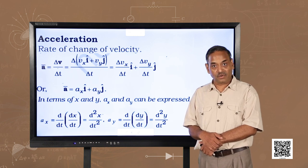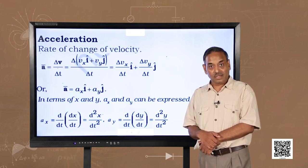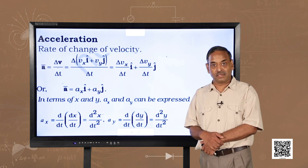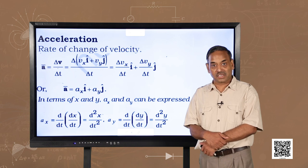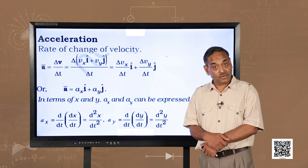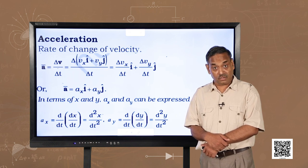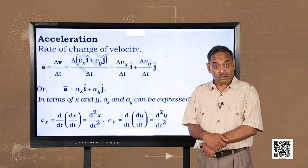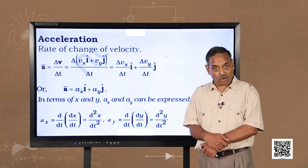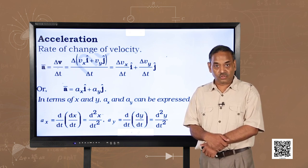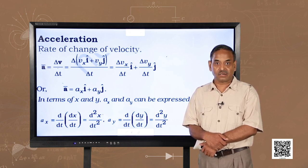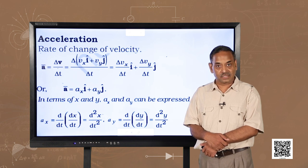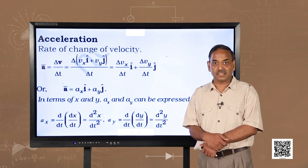So far, we have done this. Now let us see what happens to the acceleration — this is very important, my dear friends. In the case of motion in a straight line, the velocity is always in the direction of motion. Acceleration is also along the direction of motion, either in the same direction or in the opposite direction depending on whether the body is increasing or decreasing its speed.